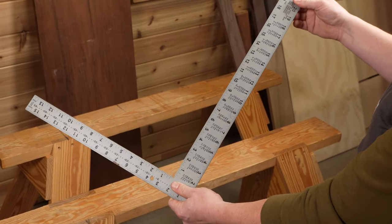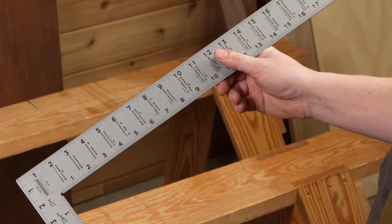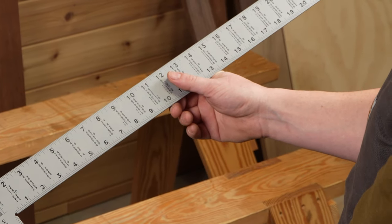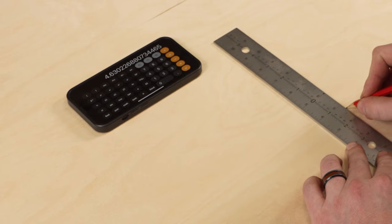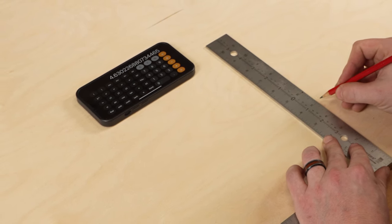The framing square has been a trusted tool for carpenters for generations. It had all the charts and graduations they needed to make calculations on the job site. Now we have the internet, calculators, and millions of great how-to videos right in our pocket.